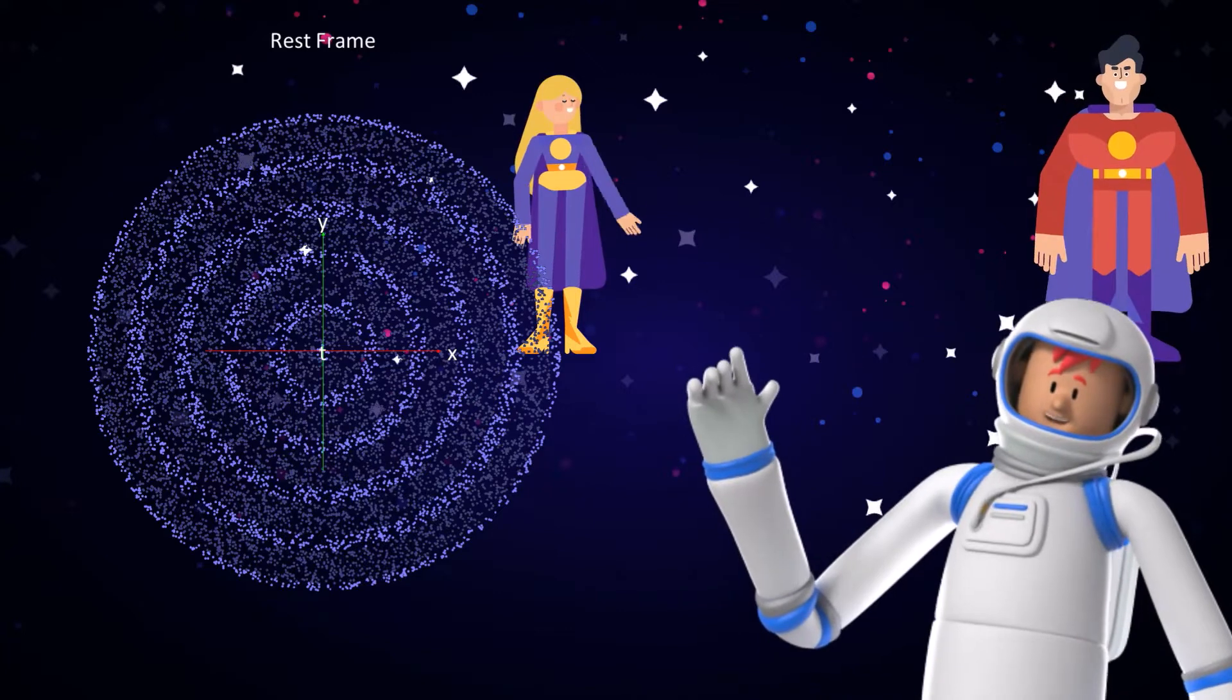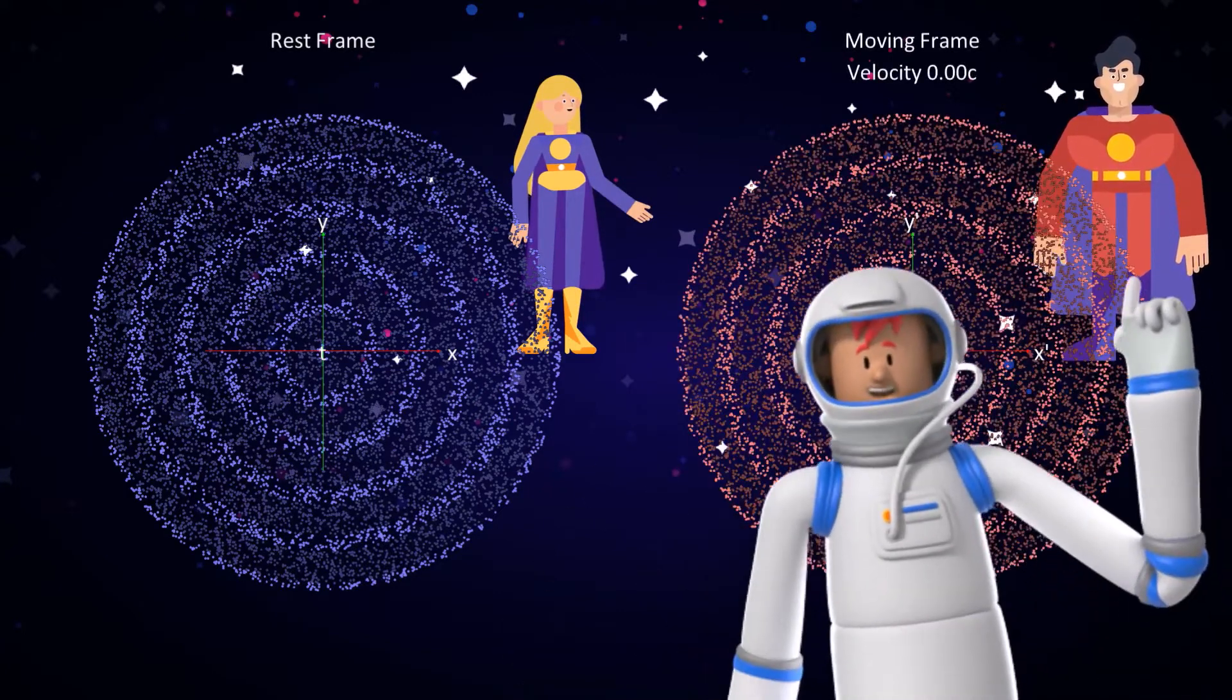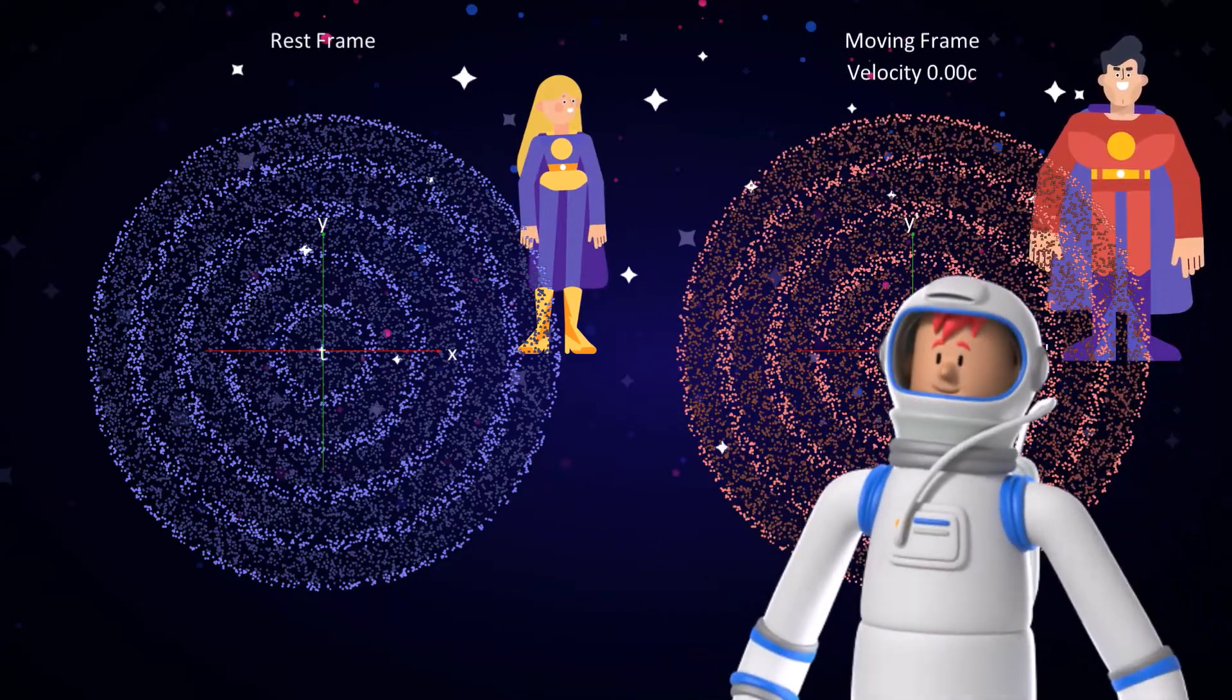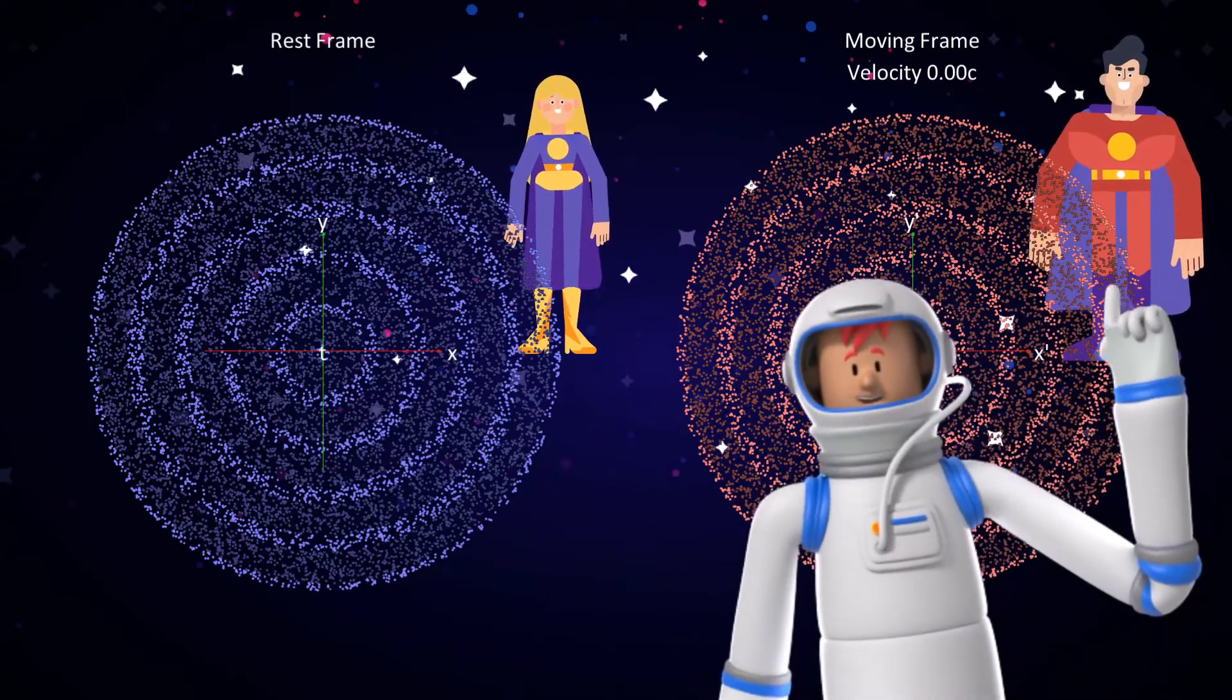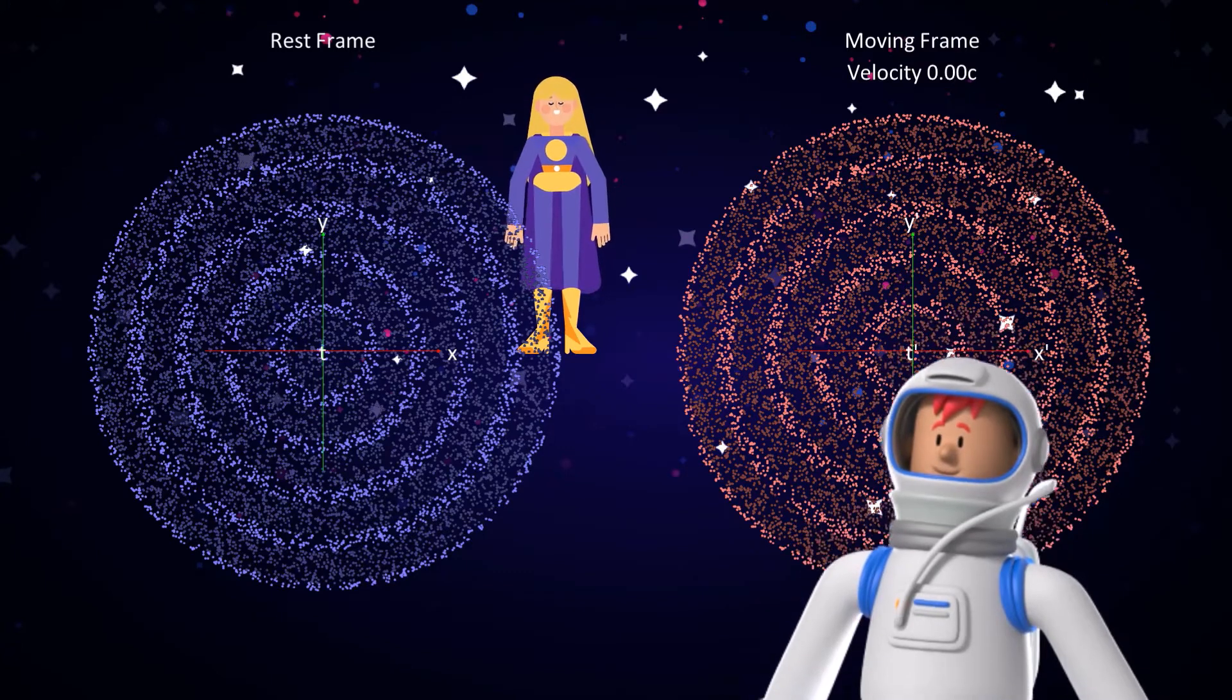Next, let's add the view from the moving frame on the right, showing these same points after the Lorentz transforms have been applied. Initially, as now, I'll start the moving frame at rest, and build up speed so that we can watch the changes evolve.